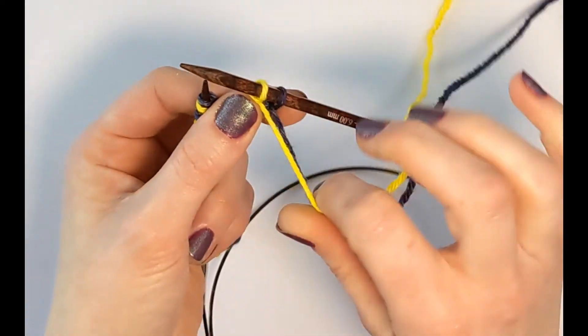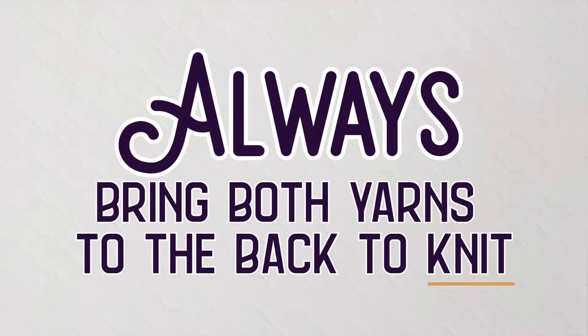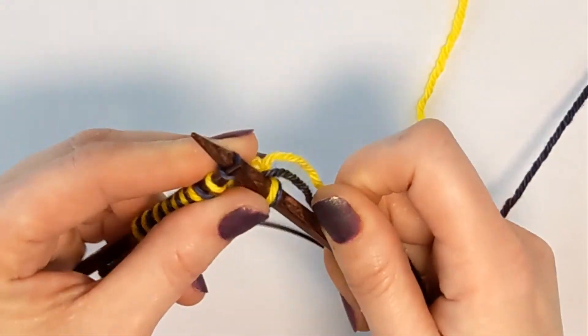Bring both yarns to the back. Always bring both yarns to the back before working a knit. And then knit into that next stitch using the first color.